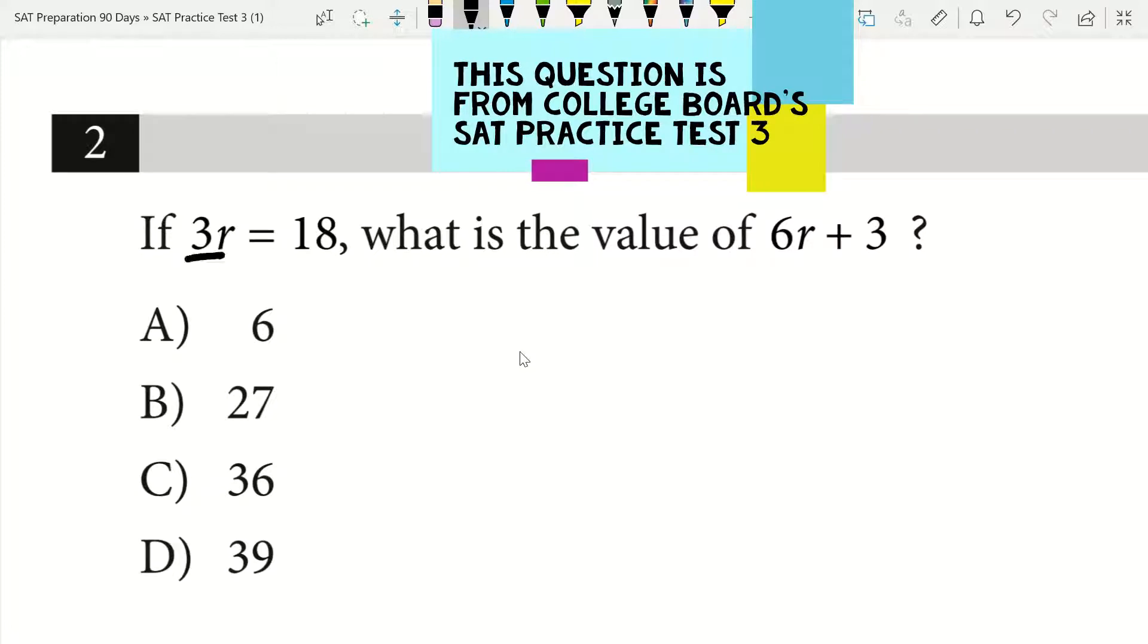If 3R equals 18 and I'm asked what the value of 6R plus 3 is, a mistake in my opinion would be to go through and solve for R, okay?